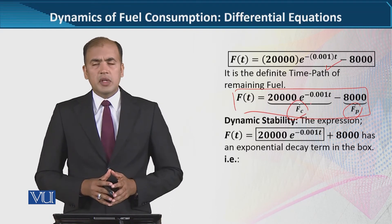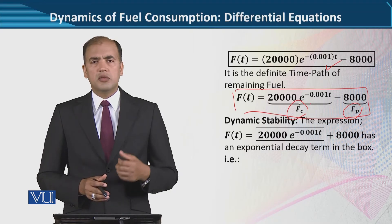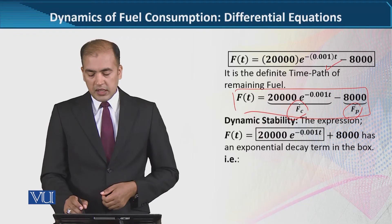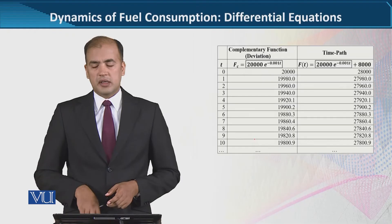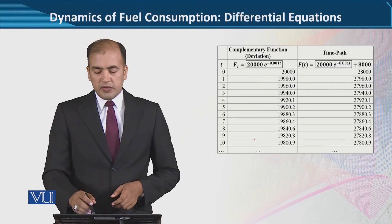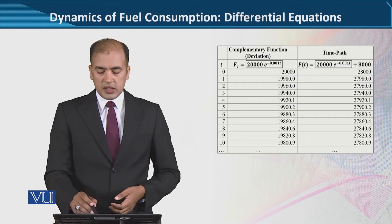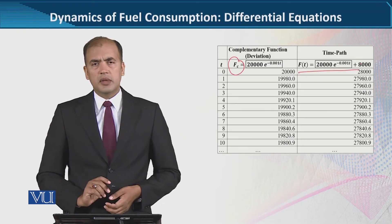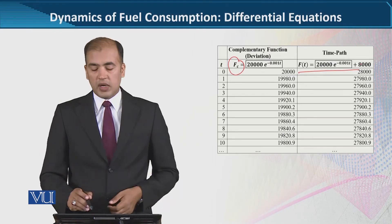We know that for dynamic stability, the complementary function must decrease toward zero. Here we have placed a box over it to emphasize this. The emphasis is done in a numerical way — first the complementary function is written, then the overall time path. Just to see how it happens if we use numerical values.